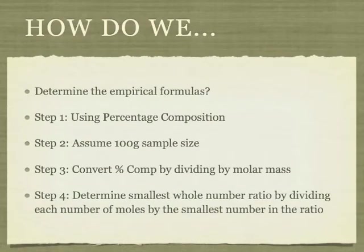To determine the empirical formulas, we use a four-step process. The first step is using the percent composition. The second step, we assume a 100 gram sample size. The third step, we convert the percent composition by dividing by the molar mass. And then step four, we determine the smallest whole number ratio by dividing each number of the moles by the smallest number in the ratios that we determined.